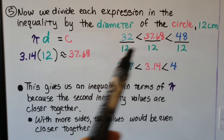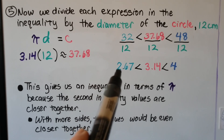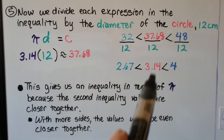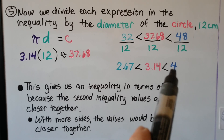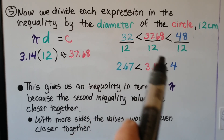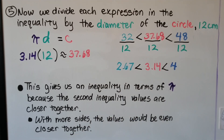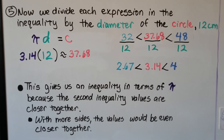We divide each expression in the inequality by the diameter — 12 centimeters. P₁ was 32 centimeters, P₂ was 48 centimeters, and the circumference was 37.68. Dividing each by 12 gives 2.67 for P₁, 3.14 for pi, and 4 for P₂. So 3.14 is greater than 2.67 and less than 4. With more polygon sides, the values would be even closer together.